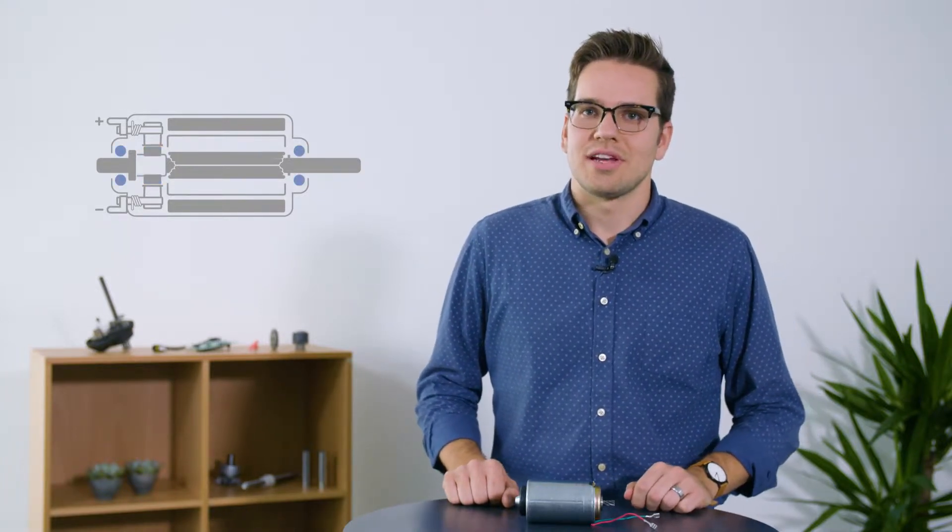Two brushes inside of the DC motor transfer DC power to the electromagnetic coil inside of the DC motor. The ball bearings on the outside of the DC motor ensure minimal friction between the axle and the outer elements of the motor itself.